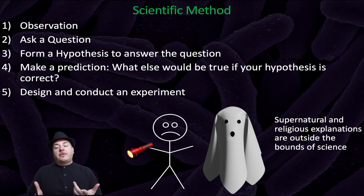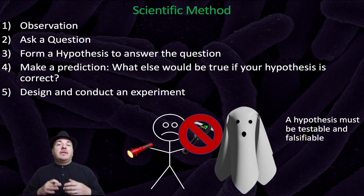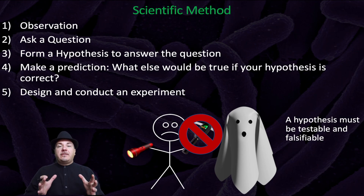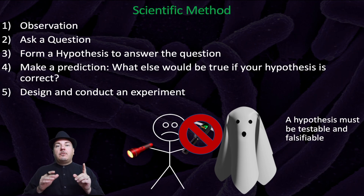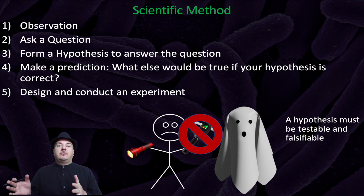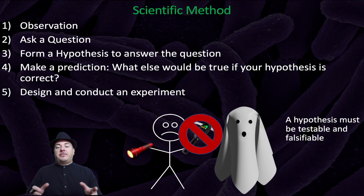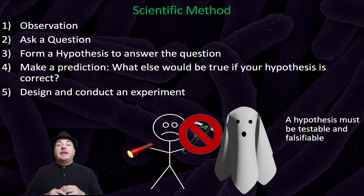In summary, supernatural or religious explanations are outside the bounds of science. This was a brief overview of what a scientific hypothesis is and the process of the scientific method. Remember, there's a companion video — Dr. Sage's Introduction to Science — which you need to watch to learn more details about terms like controlled experiment, negative control, positive control, etc. Please go watch that video if you haven't already. Until next time, this has been Dr. Sage.